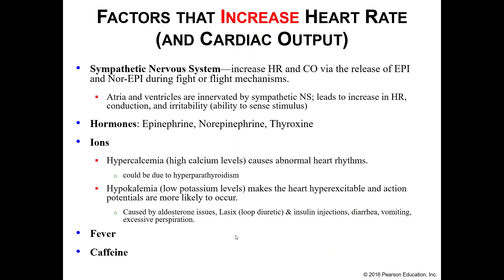Factors that will increase your heart rate will ultimately increase your cardiac output. First is your sympathetic nervous system — your fight-or-flight response — which increases heart rate and cardiac output by releasing epinephrine and norepinephrine. The atria and ventricles are also directly innervated by your sympathetic nervous system, directly increasing heart rate, conduction within your heart, and the irritability of your cardiac myocytes, in addition to the epinephrine and norepinephrine.